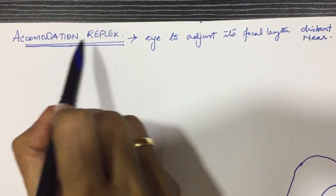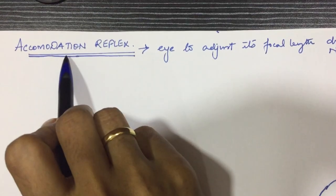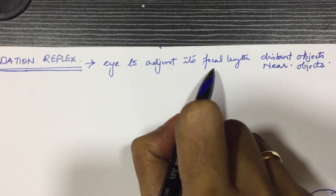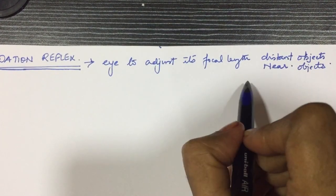Today we'll be seeing what is accommodation reflex and the pathway involved in it. So what is accommodation? The ability of the eye to adjust its focal length when it moves the vision from distant object to near object is called accommodation.